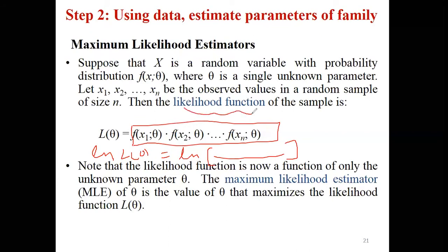We have to maximize our likelihood function. To maximize it, we differentiate it first with respect to that parameter and set it equal to zero to calculate the value of the parameter. This is the necessary condition.